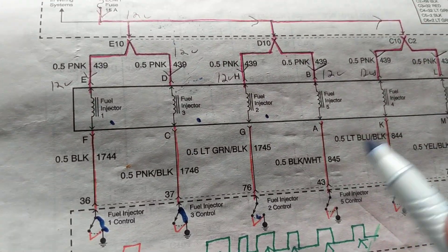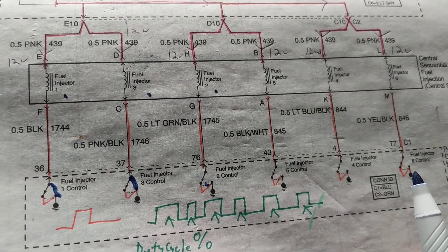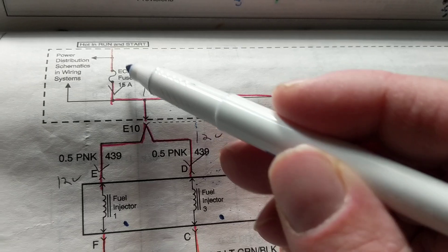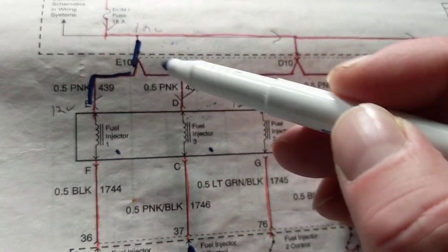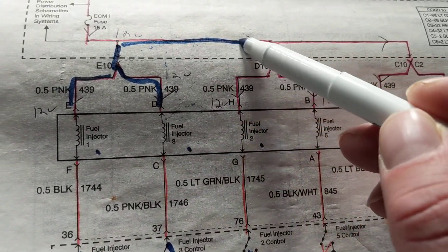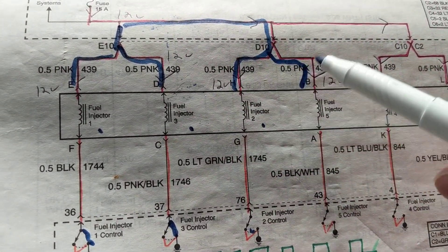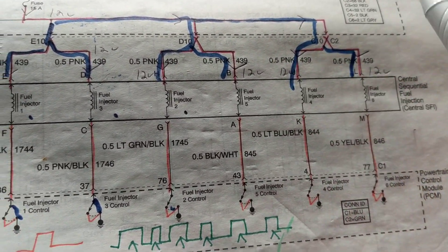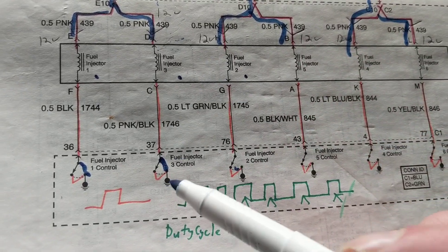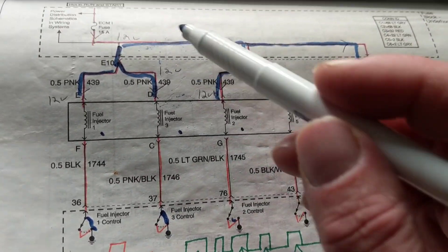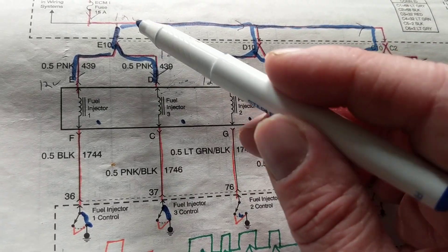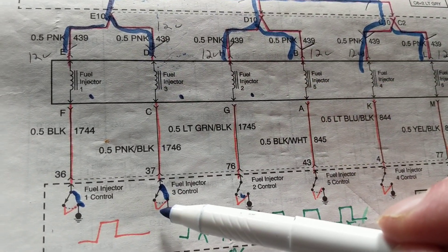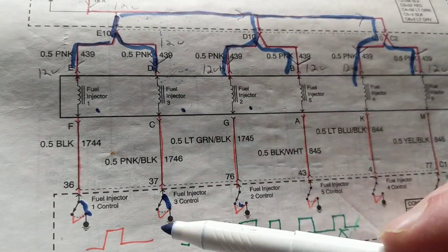Now that you understand that concept, we need a power supply — 12 volts for each injector. Here's the 12 volts going through the ECM fuse, branching out to each fuel injector. Each branch will get 12 volts and current flowing through it. As long as the computer closes the circuit — providing a complete path to ground — current will flow through that branch.